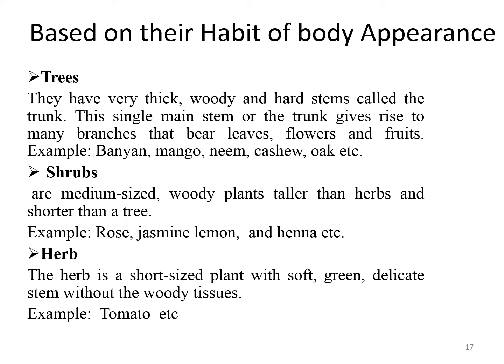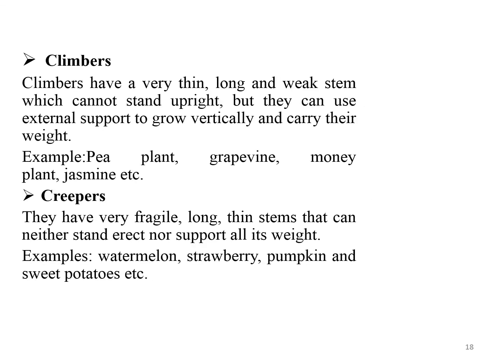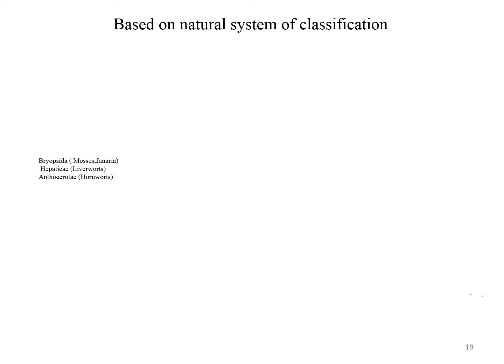Herbs are short plants with a soft, green, delicate stem without woody tissue. Examples include tomato. Climbers have a very thin, long, and weak stem which cannot stand upright, but they use external support to grow vertically and carry their weight. These plants use special structures called tendrils. Examples include pea plants and jasmine. Creepers, as the name indicates, are plants that creep on the ground. They have very fragile, long, thin stems that can neither stand erect nor support their weight. Examples include watermelon, strawberry, and sweet potato.